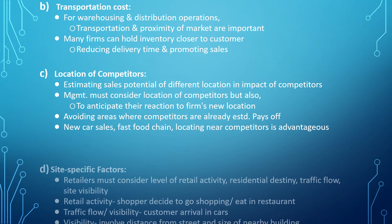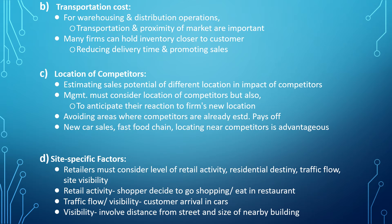New car sales and fast food chains locating near competitors can be advantageous. Site-specific factors for retailers include the level of retail activity, residential density, traffic flow, and site visibility. Retail activity concerns shoppers deciding to go shopping or visit routine restaurants. Traffic flow and visibility relate to customer arrivals by car, and visibility concerns the distance from the street and the size of nearby buildings.